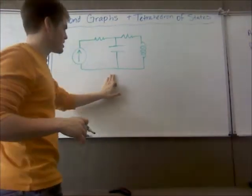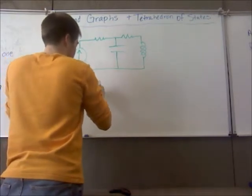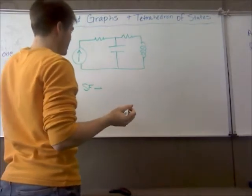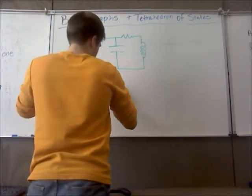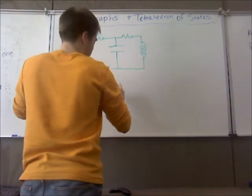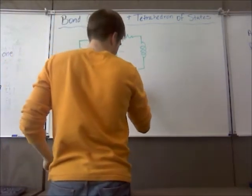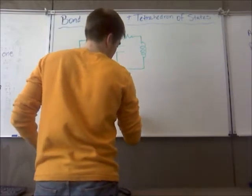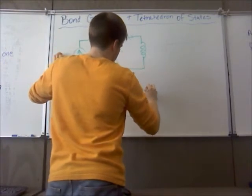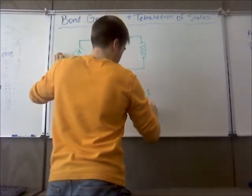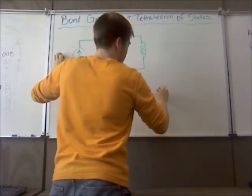So now going through it this time, what we're going to have is your source flow at the beginning and that's going to feed into a one junction. At that one junction you're going to have your resistor and that's going to feed into a zero junction which has your capacitor in parallel with the system feeding into another one junction where you've got your second resistor and your inductor.